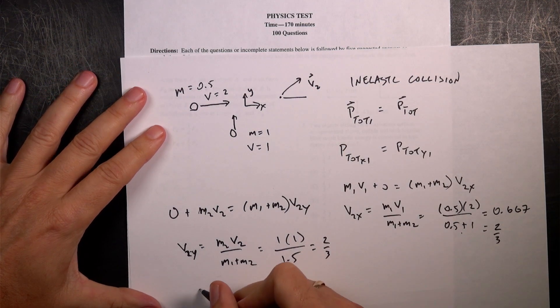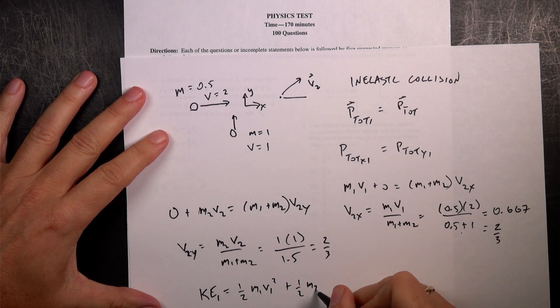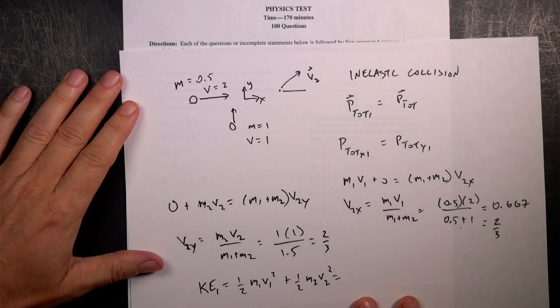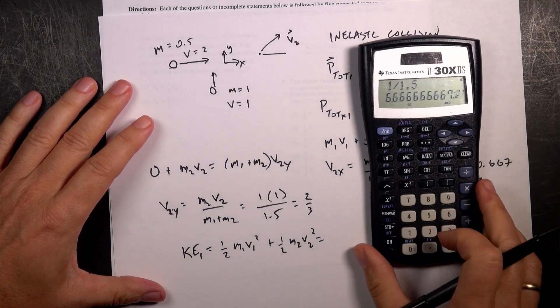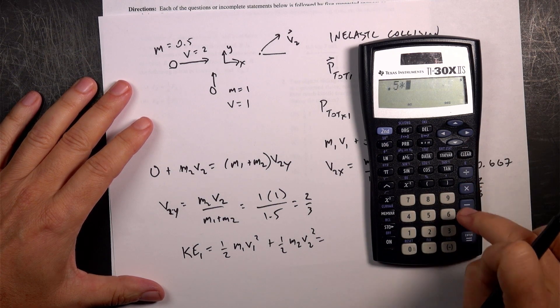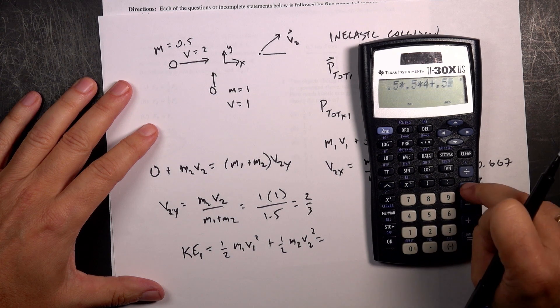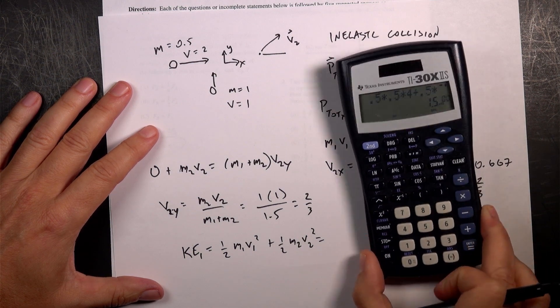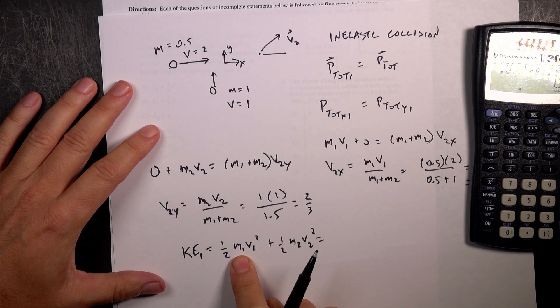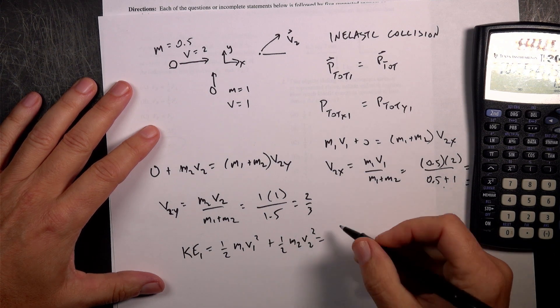So now let's do this. Kinetic energy 1 is going to be 1 half M1 V1 squared plus 1 half M2 V2 squared. And I actually need that as a number. So let's get that as a number. I'm just going to plug it in. 0.5 times M1 is 0.5 times the velocity squared is 4 plus 0.5 times 1 times 1. So I get 1.5. Is that right? So that's going to be 2 squared is 4 but then 1. And this is 1 half, so 1.5 joules.